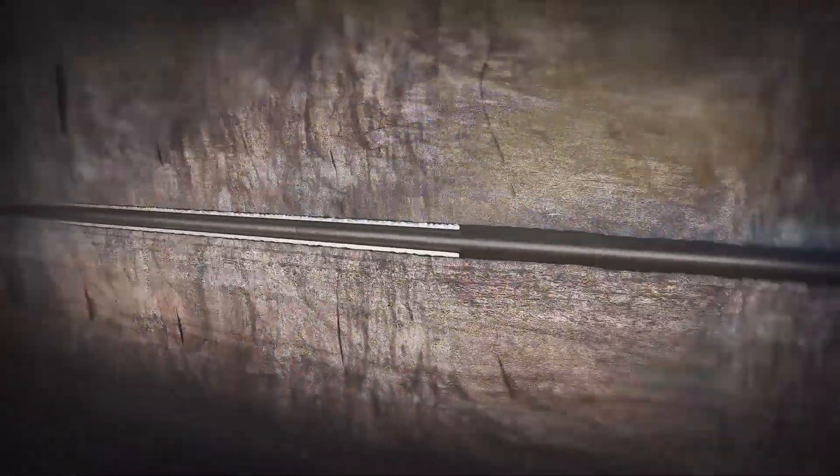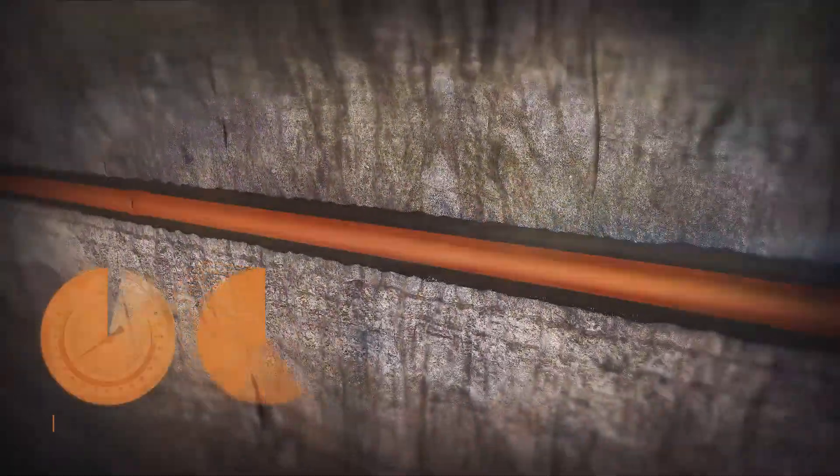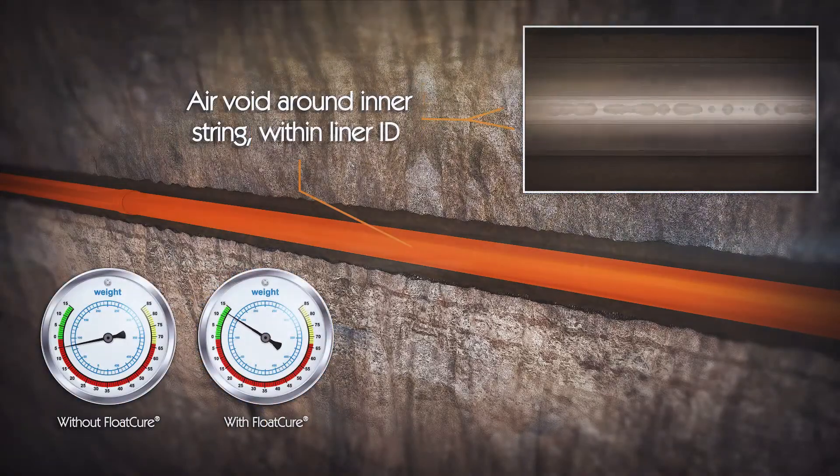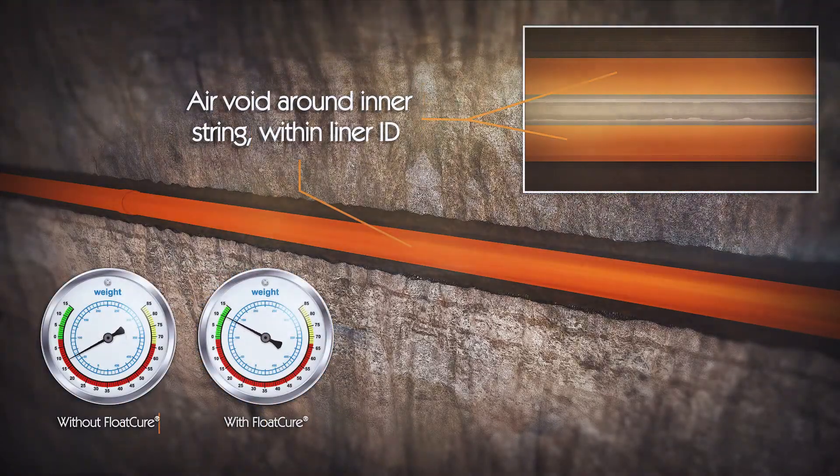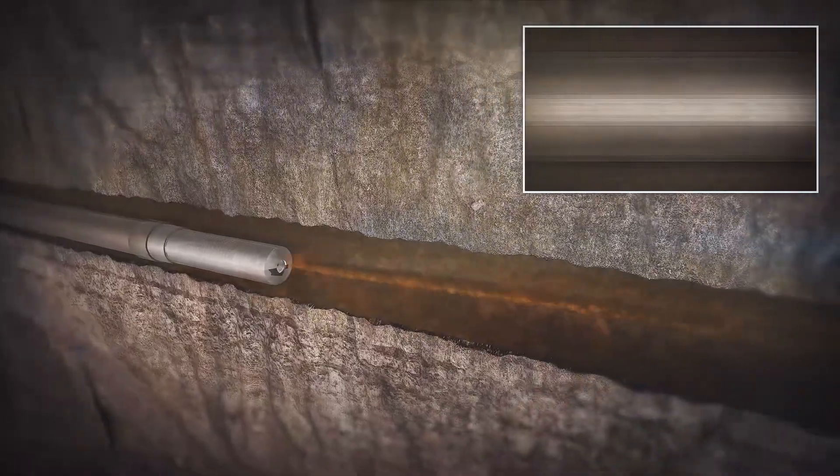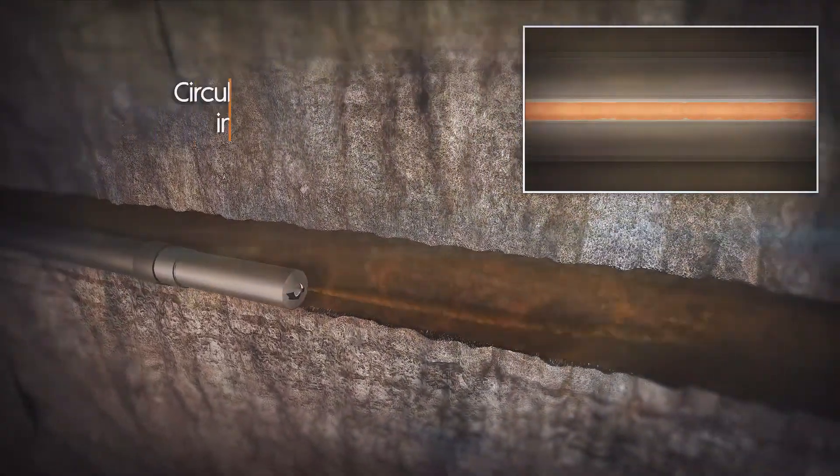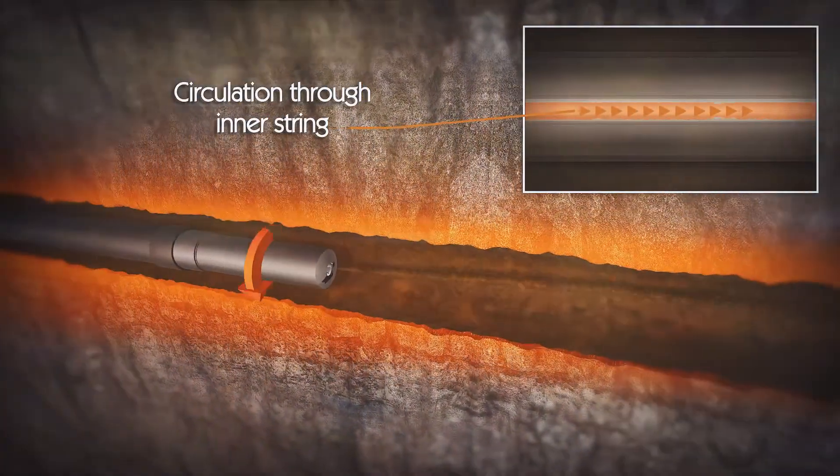The string is run in whole with the float-cure buoyancy benefit combined with the capability to circulate, dramatically improving the probability of reaching TD. Circulation through the inner string can now be established.